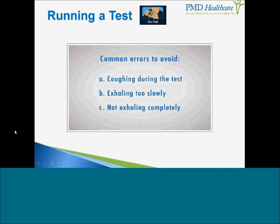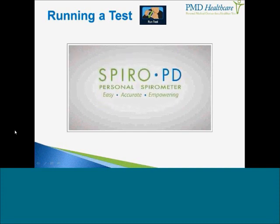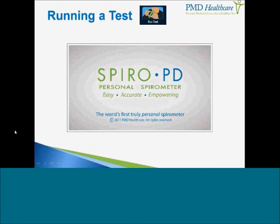Here are common errors to avoid: coughing during the test, exhaling too slowly, and not exhaling completely. A couple of additional tips: it's really important when performing the test to make sure you sit up nice and straight and tall. Make sure that you do your breathing test in the same position every single time — whether that's sitting down or standing up. Keep your chin up and try not to hunch over as you're breathing. Also remove any gum or objects you have in your mouth, and that will make sure you do the test accurately every time.